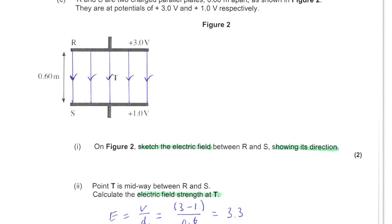Next, you are told that R and S are two charged parallel plates. So we have a different scenario here. And those parallel plates are 0.6 meters apart. So here you see that distance marked in the diagram. The potentials are given as plus 3 volts and plus 1 volt.